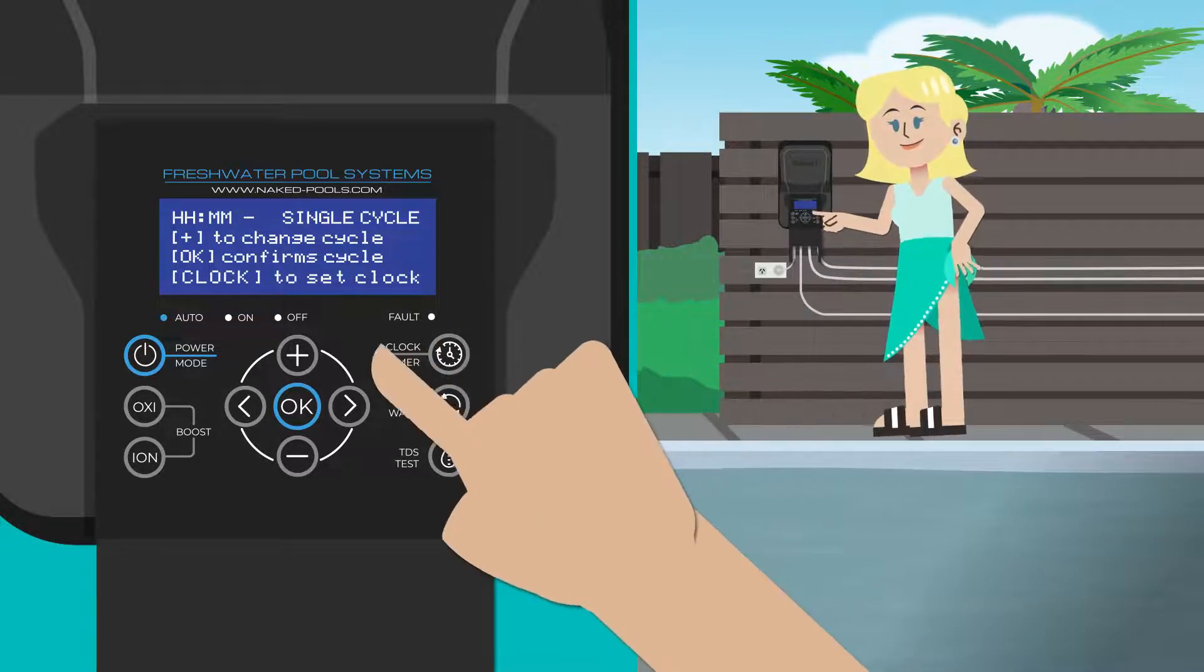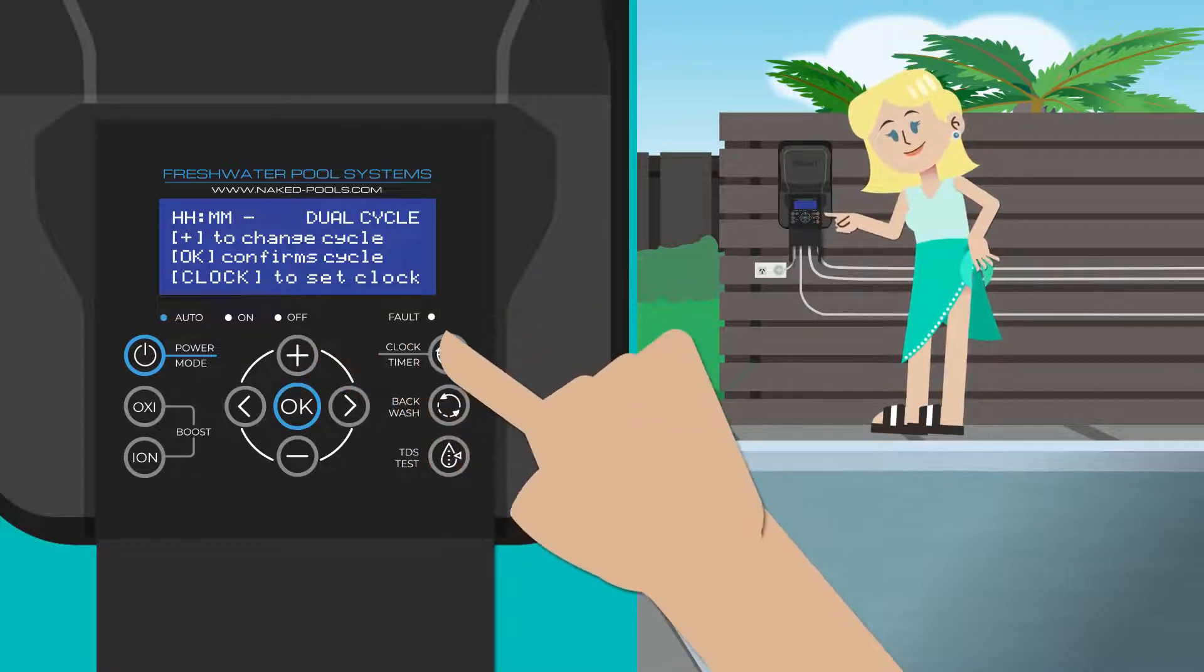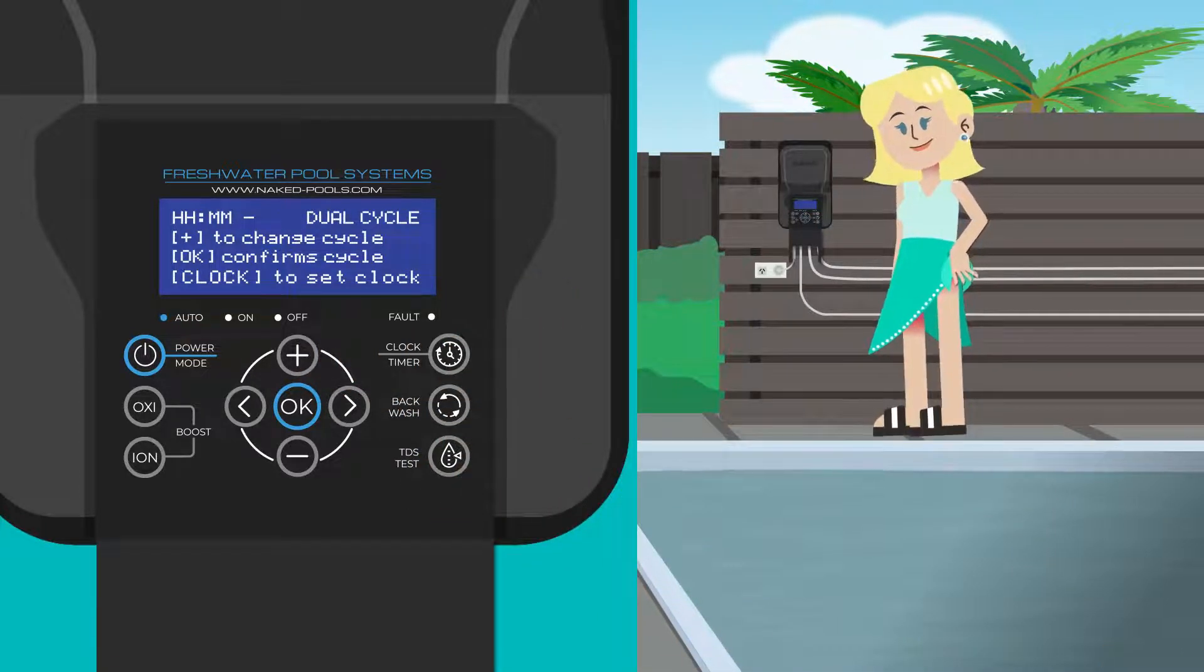It is important to remember to set it back to a dual cycle timer and possibly increase the run times in the warmer months to ensure adequate circulation.